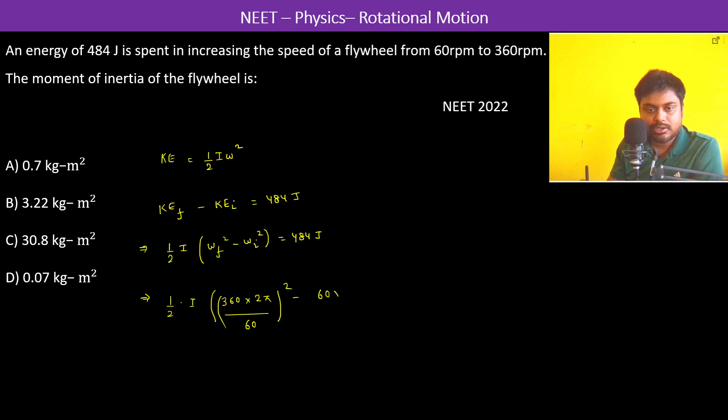60 into 2π divided by 60 whole square is equal to 484 joules. This is 6, so we have half into I, so this is 12π square, 12 into π whole square which is 144π² minus 4π² is equal to 484.